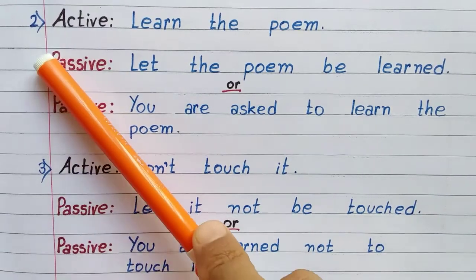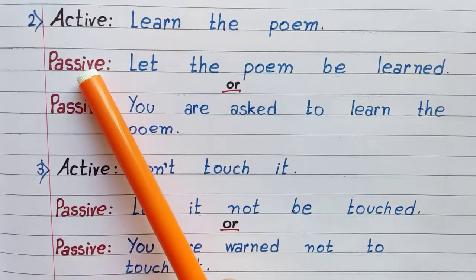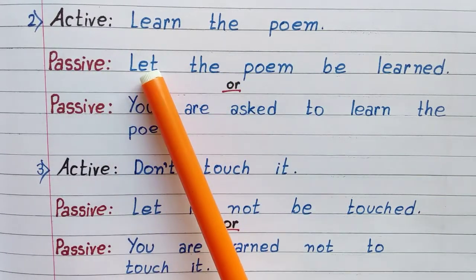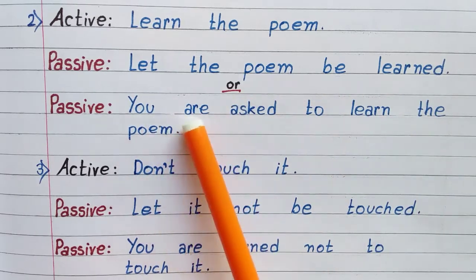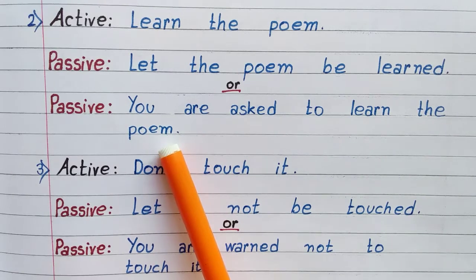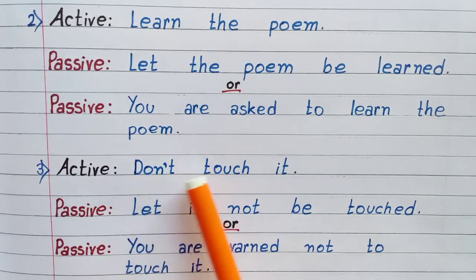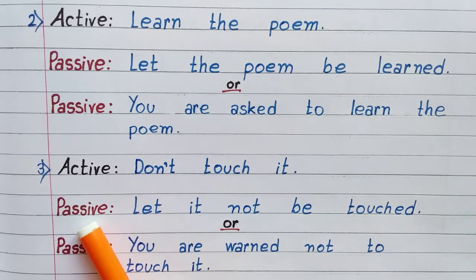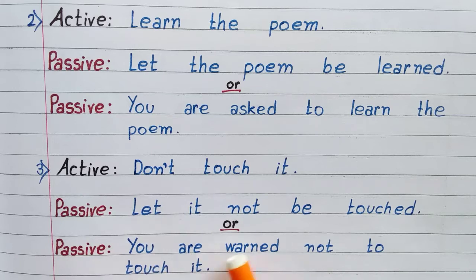Number two — Active: learn the poem. Passive: let the poem be learned, or — you are asked to learn the poem. Number three — Active: don't touch it. Passive: let it not be touched, or — you are warned not to touch it.